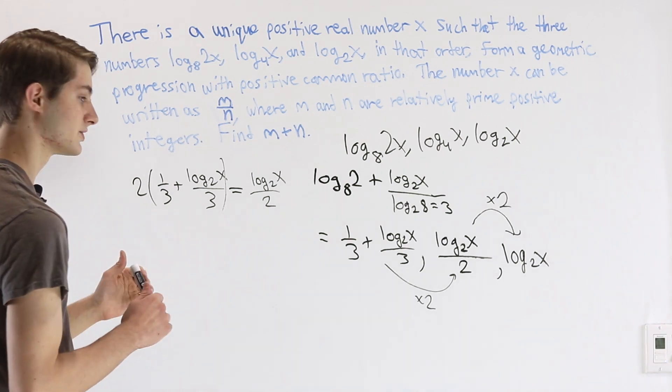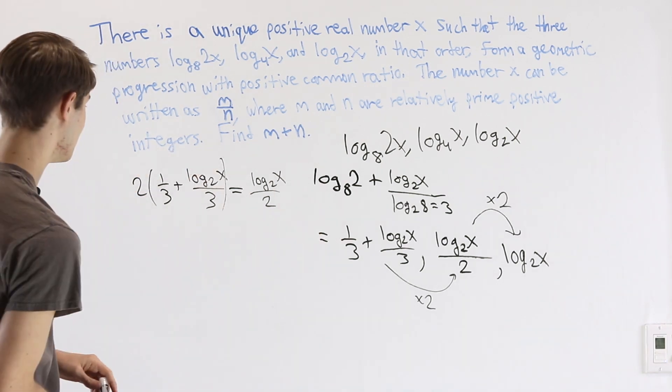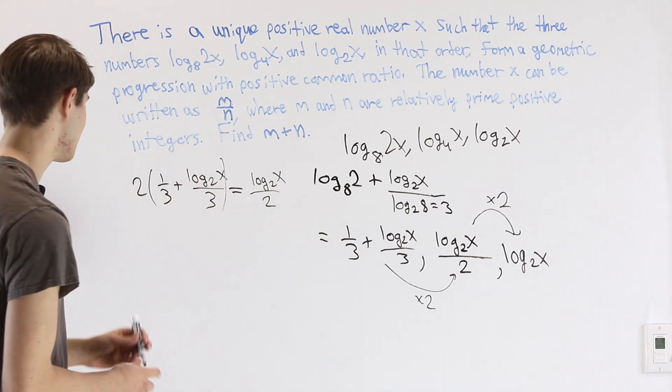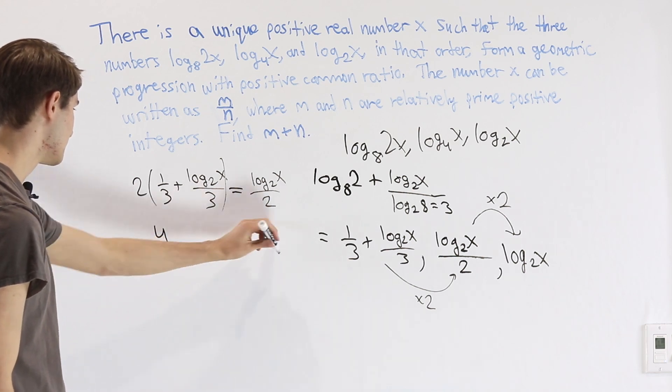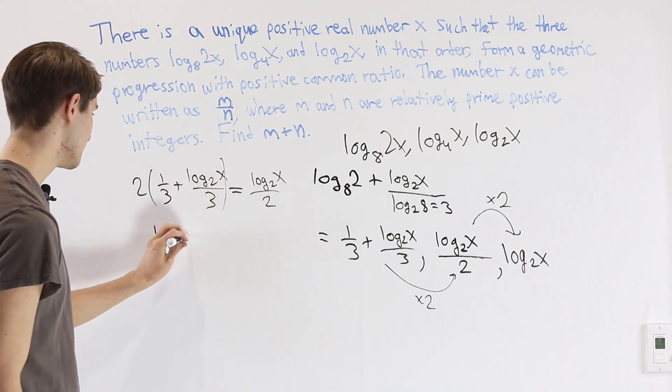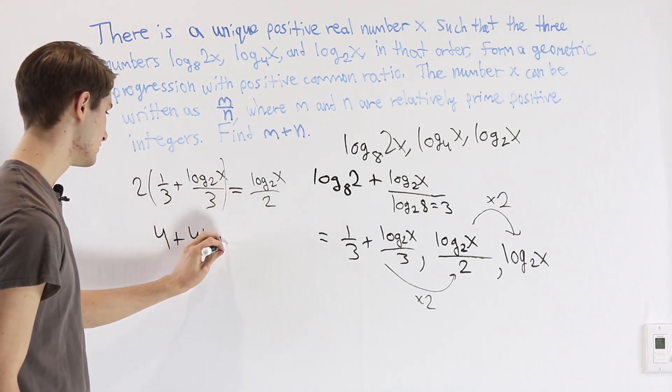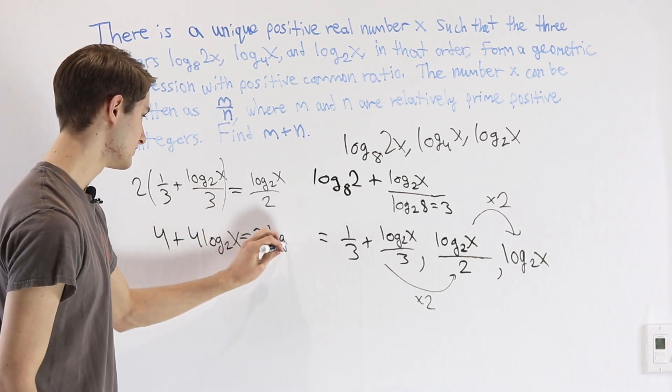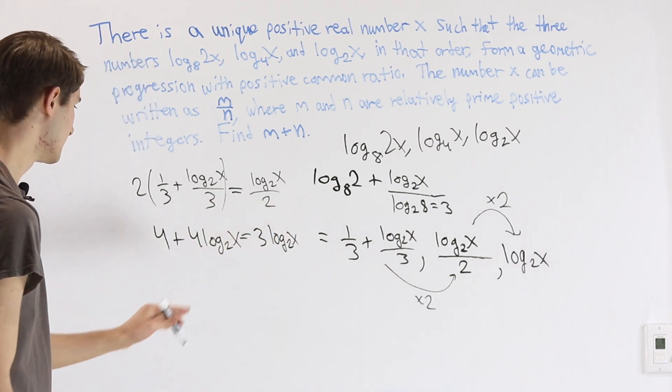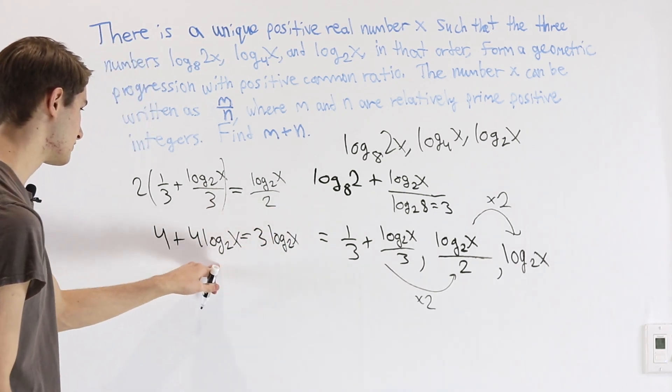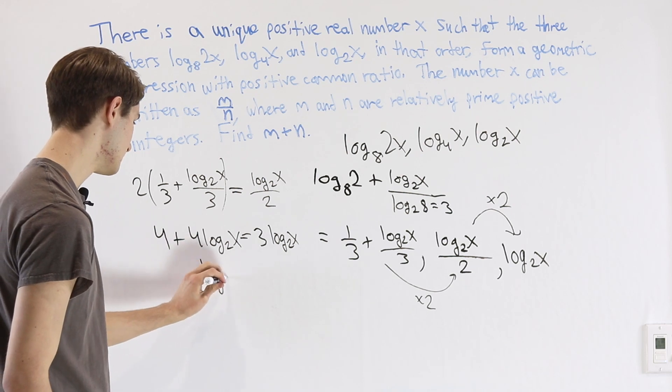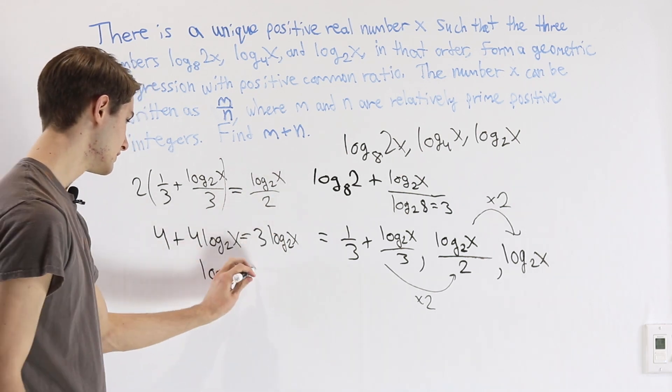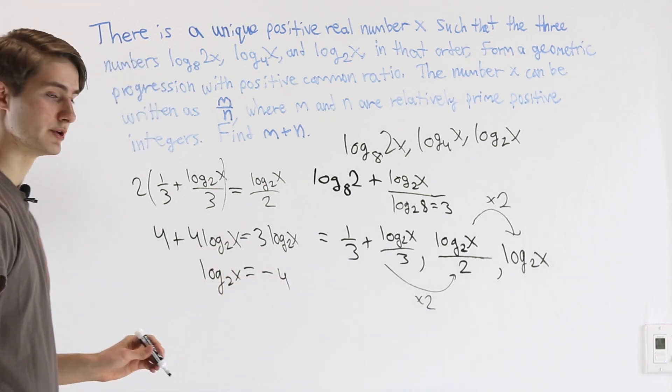Now we just have to solve for x. So let's start by getting everything out of the denominator. So we'll multiply by 2 and 3, or just multiply by 6. And that will give us on the right 2 times 2 is 4 plus 4 log base 2 of x equals this 3 times log base 2 of x. And now we can just subtract 3 log base 2 of x on both sides. So we get 1 log base 2 of x on the left, and then we subtract 4 on both sides, so we get negative 4 on the right side.